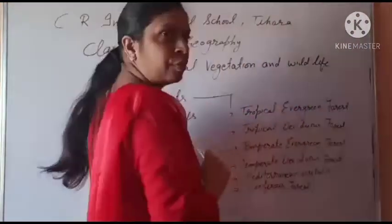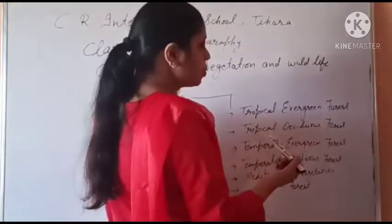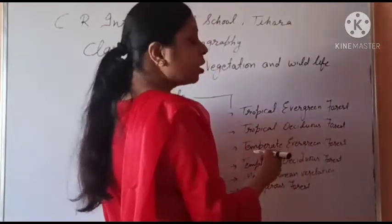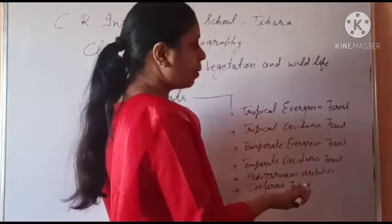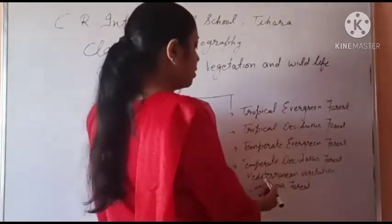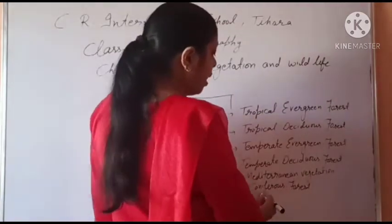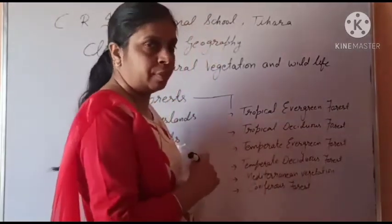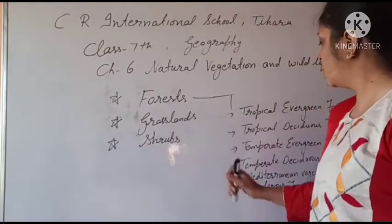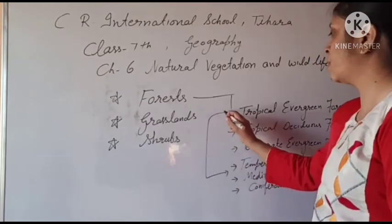Forests are divided into: Tropical Evergreen Forest (ocean-kati-bandhi, sada bahar), Tropical Deciduous Forest (ocean-kati-bandhi, patjhad), Temperate Evergreen Forest (shitoshan-kati-bandhi, sada bahar), Temperate Deciduous Forest (shitoshan-kati-bandhi, patjhad), Mediterranean Vegetation (bhumatya sagari ke nazdik), and Coniferous Forests (shimpu-dhari). Today we will discuss four of these six types.